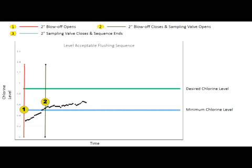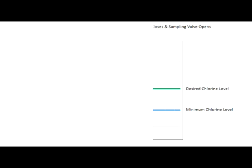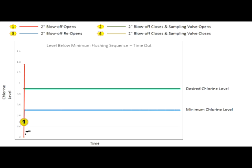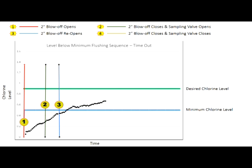Initial and final chlorine levels, time of day, and flush duration data is recorded onto the PLC and is available for download onto the microSD card. A third scenario: if sampled water residual level is below the program minimum chlorine level, the unit will begin to flush and continue to sample. If the sample does not achieve the program desired residual level, the unit will continue to flush until the programmed maximum total flushing time has been reached. Both valves will close, ending the sampling sequence.